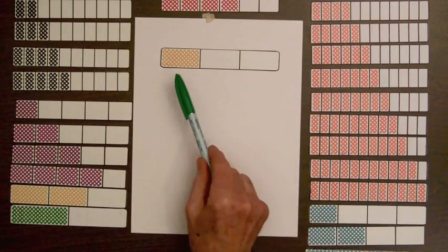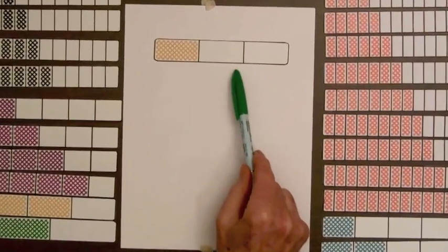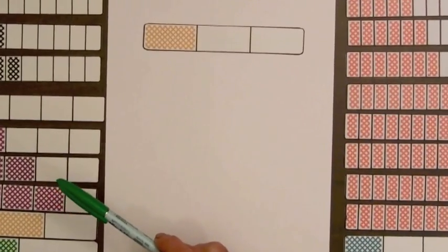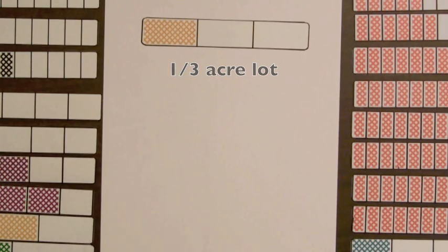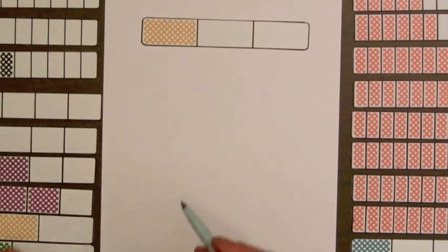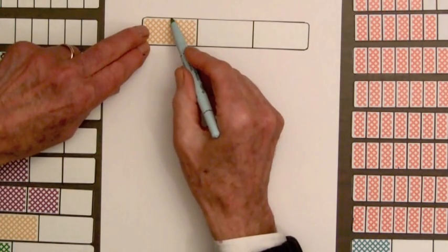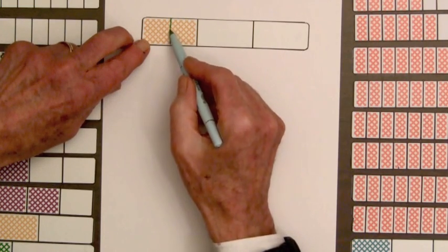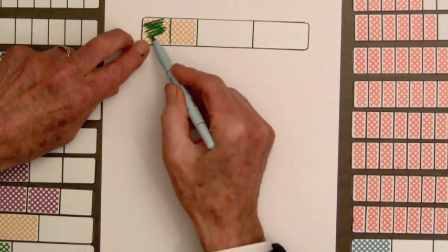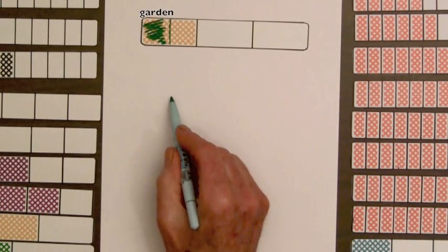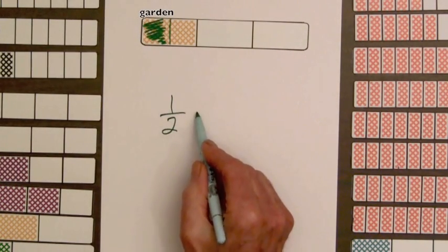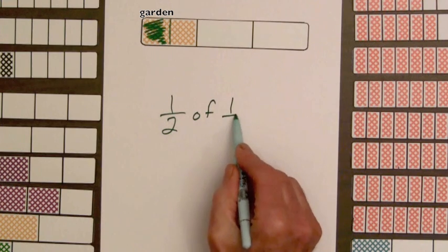A family has a one-third acre lot behind their house and considers planting a garden on one-half of this lot. The garden will be what fraction of an acre? So we are going to divide this lot in half.